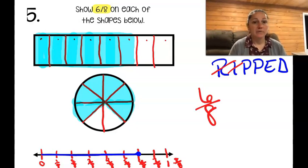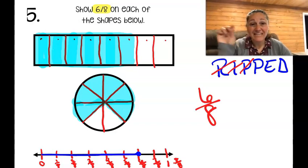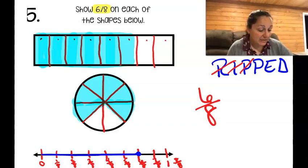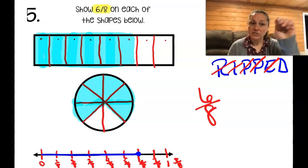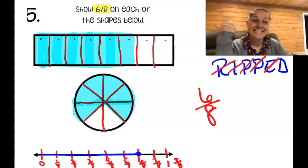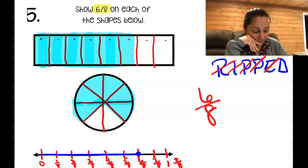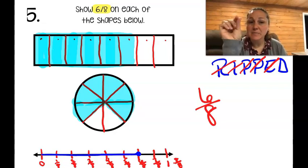I could also shade up to that line to show six-eighths — two ways to show it on a number line. That was a good word problem. Without even realizing it, we went plan, picture, execute — plan, picture, execute — plan, picture, execute for each shape, and now we're on D: does it make sense?